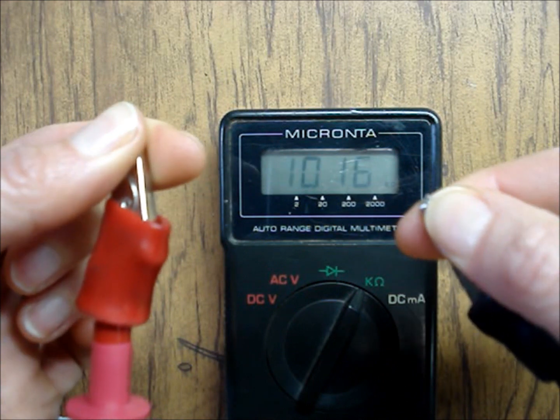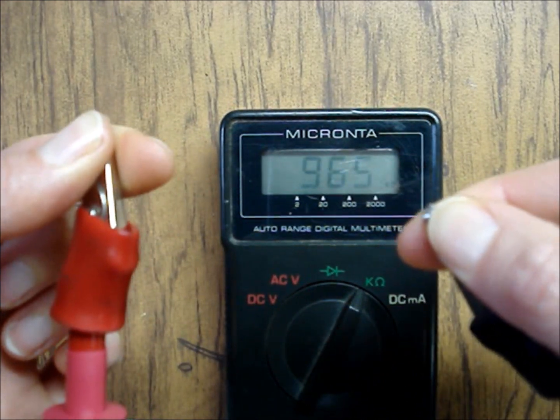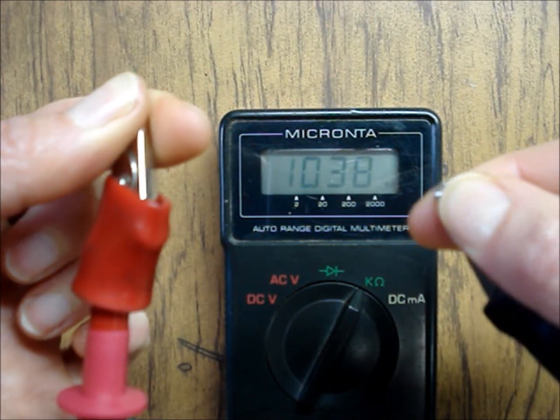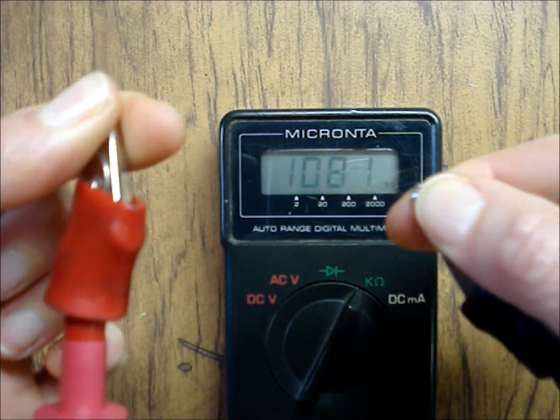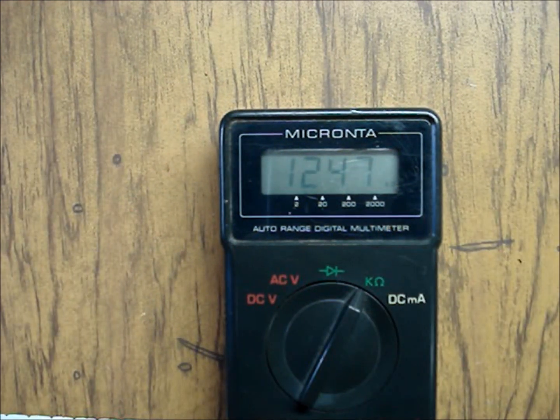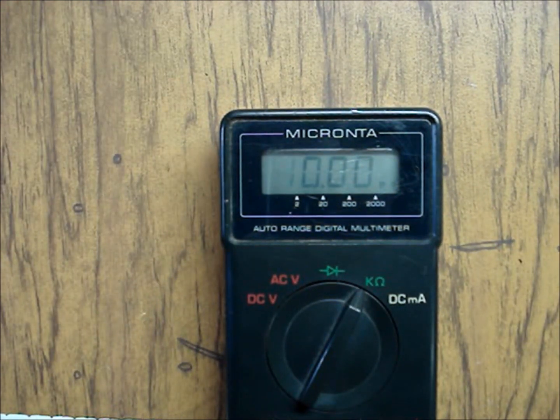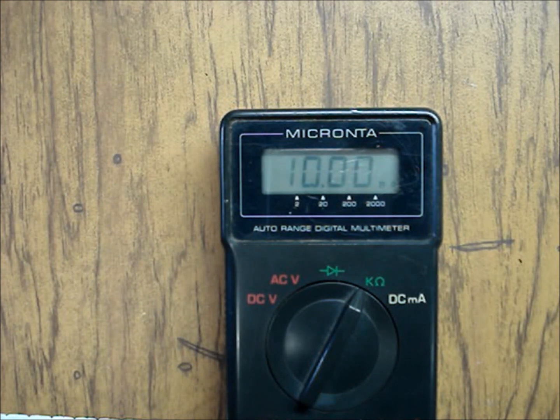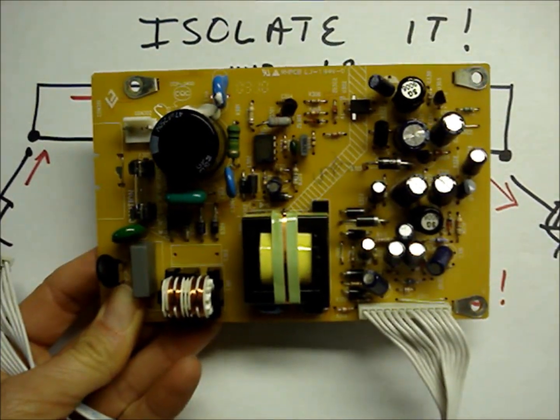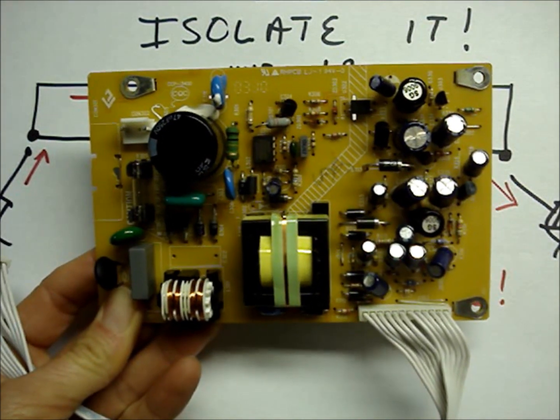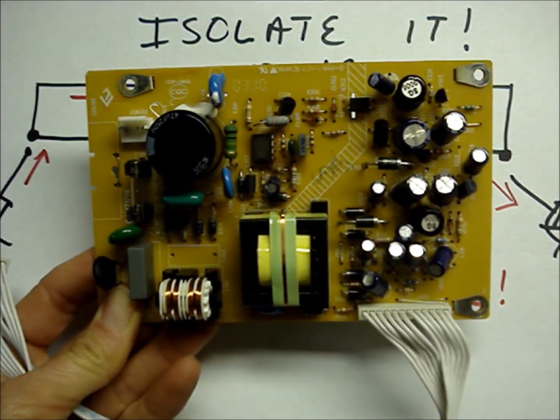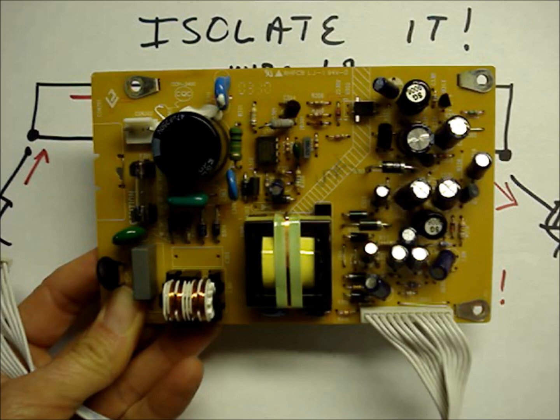If I put my fingers on each of the meter leads, I read around 9 megohms of resistance. Don't touch the tips of the meter leads while making measurements. When measuring resistance, it's important to isolate whatever you're trying to read from the rest of the circuit.